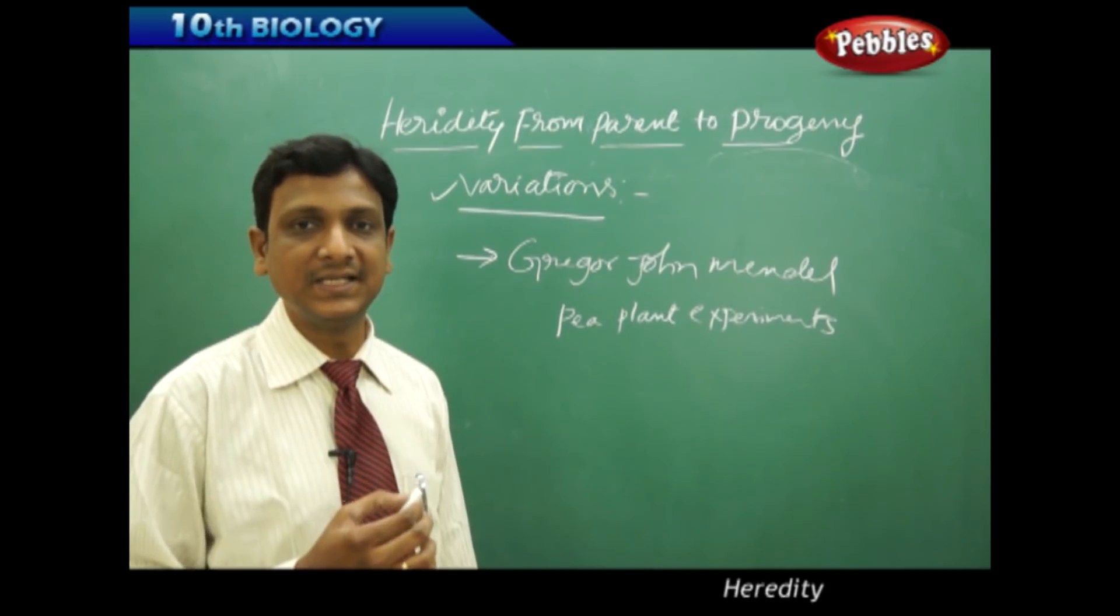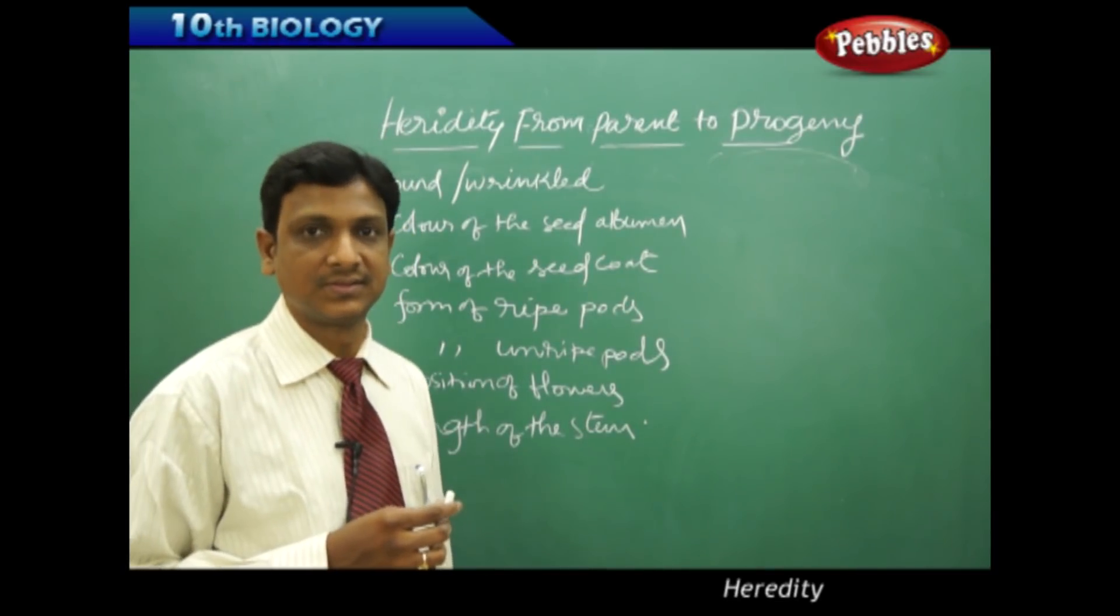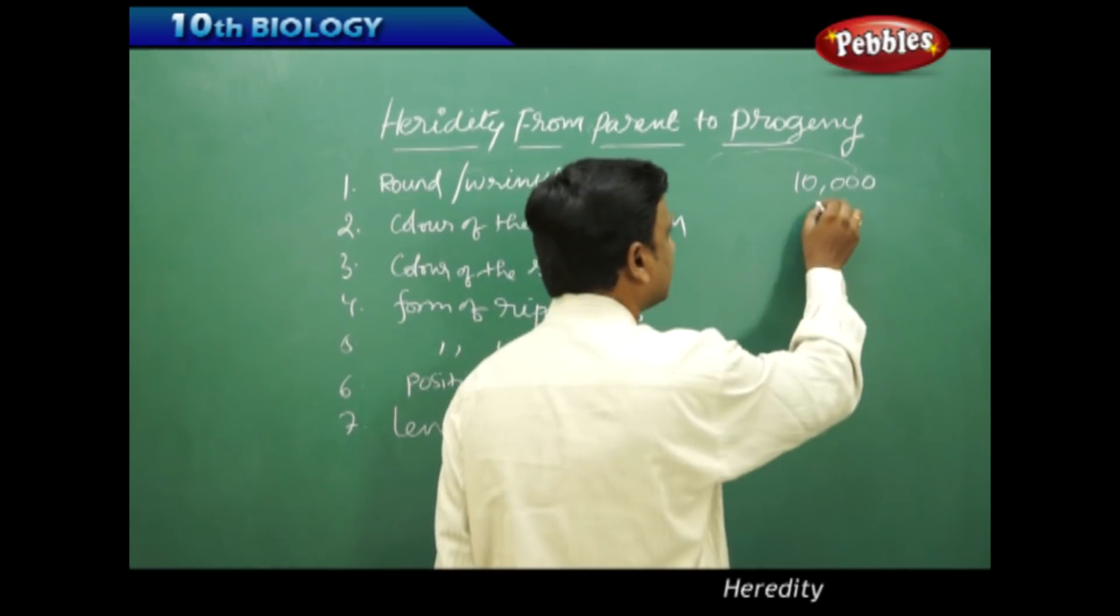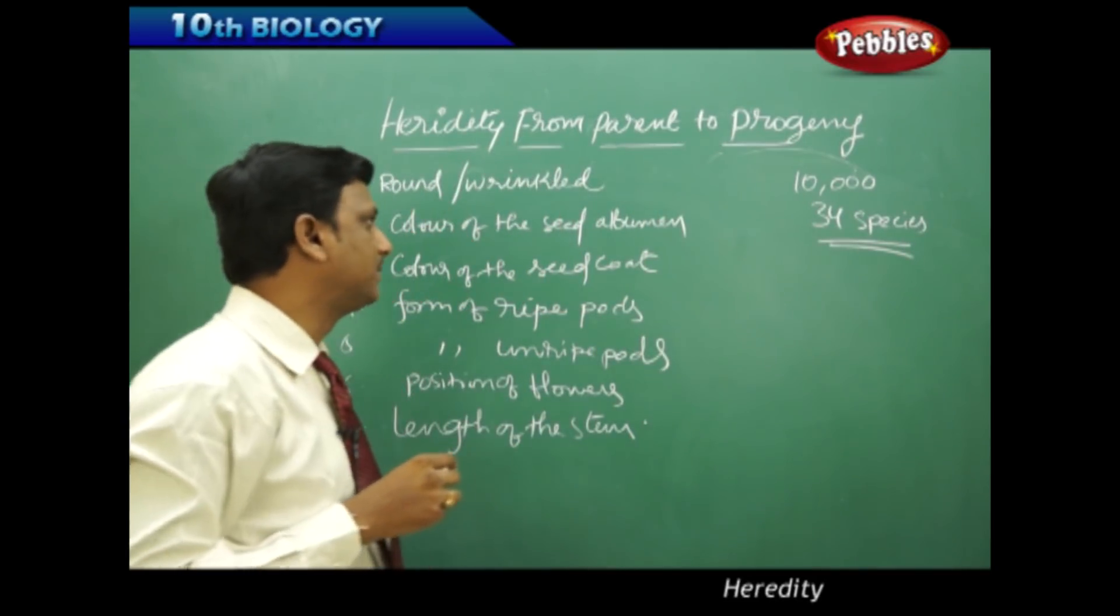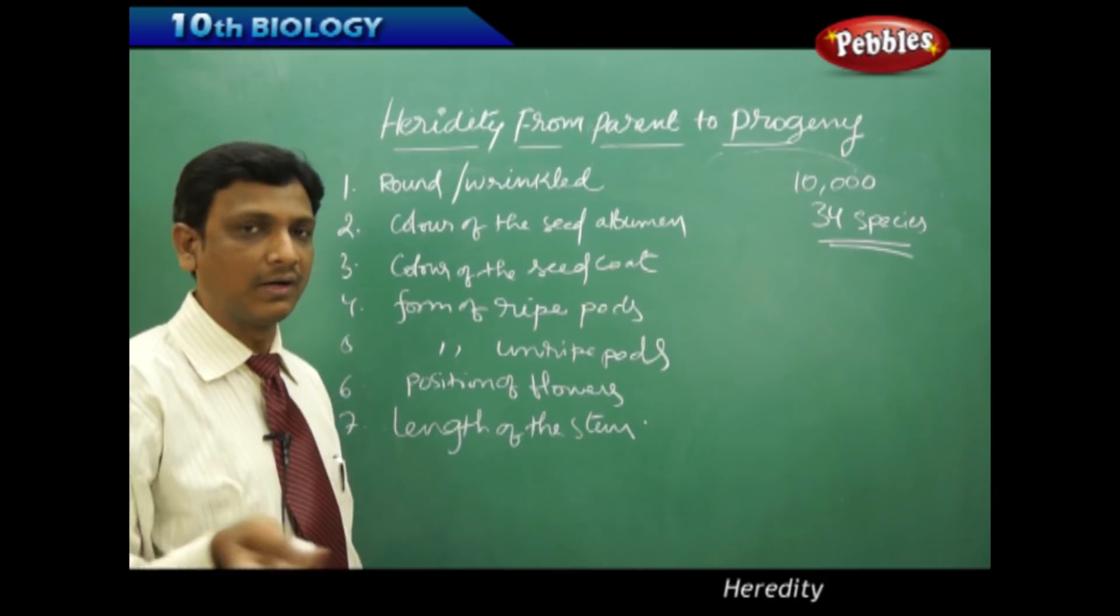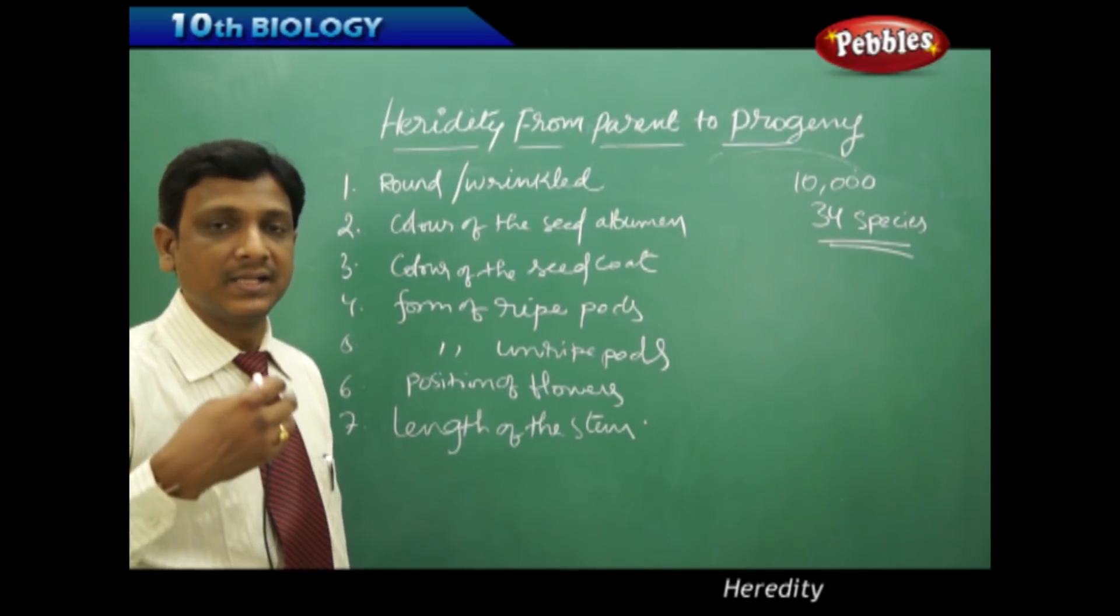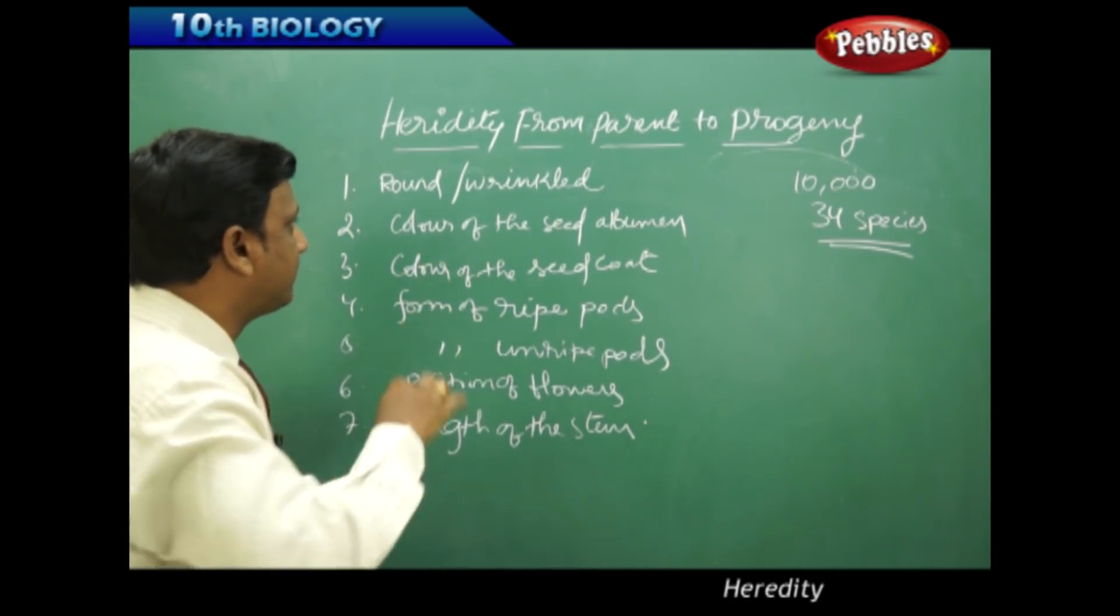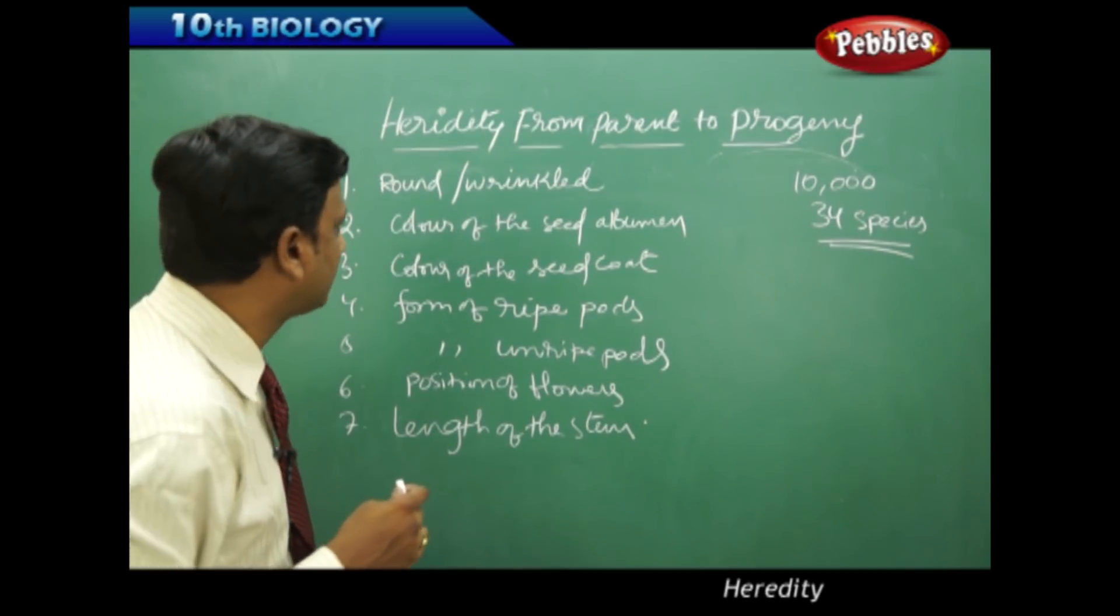We are going to see some experiments conducted by Gregor Johann Mendel and what were the conclusions or assumptions. Mendel experimented on pea plants - around 10,000 pea plants of 34 species. See how much work he has done. He observed so many characters, found so many variations among the pea plants between one pea plant and another, and within the seeds or pods of the same pea plant. He made a list of seven contrast pairs of characters for the study. Let us look at what are those characters.